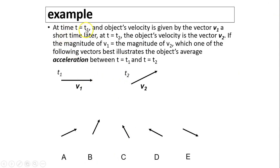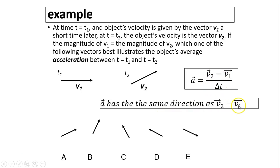Let's take a look at this example. At a time t equals to t1, the object's velocity is given by the vector v1. A short time later, at t equals to t2, the object's velocity is the vector v2. So you can see vector v1 and vector v2. If the magnitude of v1 is the same as magnitude v2, which one of the following vectors best illustrates the object's average acceleration between t equals to t1 and t equals to t2? Remember acceleration is defined as change of velocity over time? This time is a scalar quantity. So the direction of A is the same as the difference between v2 and v1. So basically this question is asking you, what is vector v2 minus v1? What does that point into? Let's see. v2 is this way. Negative v1 would be pointing to the left. So the resultant would be going that way. From the tail of v2 to the tip of v1. So the answer is C.